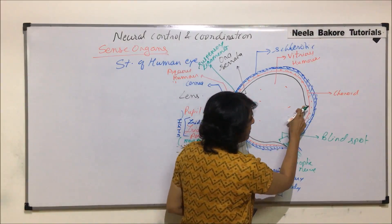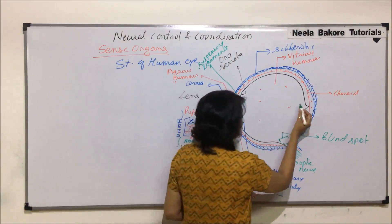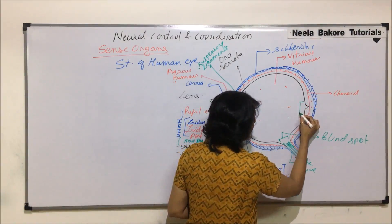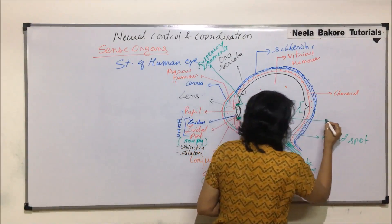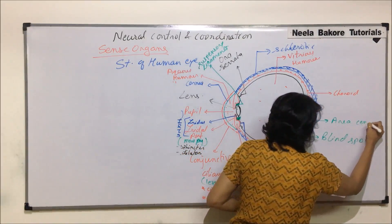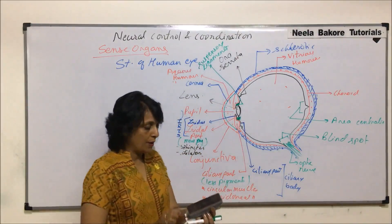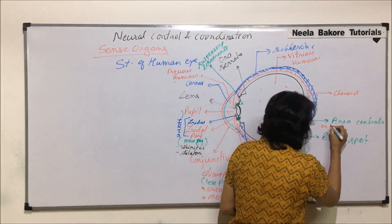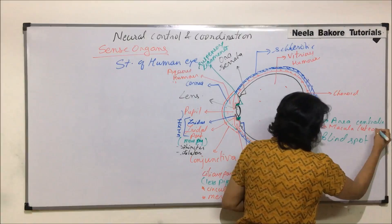In this part of the retina we have shown a depression. This central part is right in front of the lens. This region, the central region, is known as area centralis, or by another term, macula lutea.